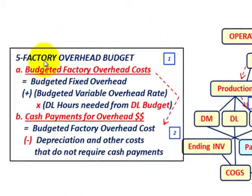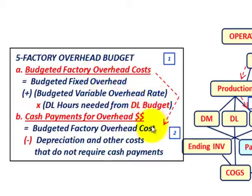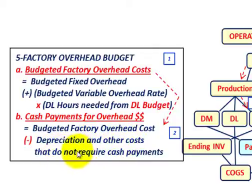The factory overhead budget starts with our budgeted factory overhead costs, which equal the budgeted fixed overhead costs plus the budgeted variable overhead rate times the direct labor hours needed — coming from the direct labor budget. Then, the cash payments for factory overhead equal the budgeted factory overhead costs minus depreciation and any other amortized costs that don't require cash payments.